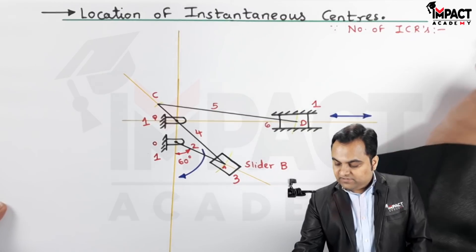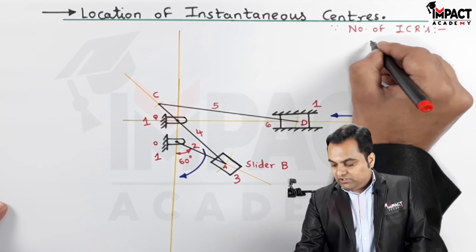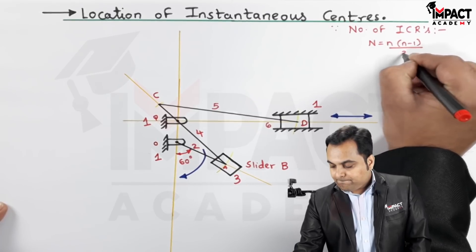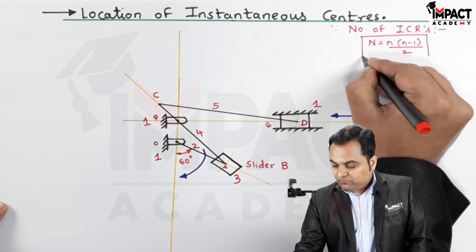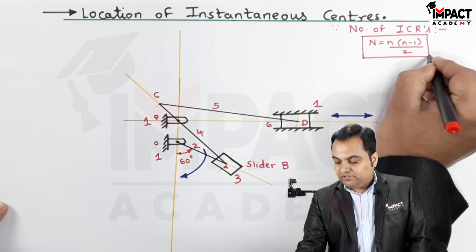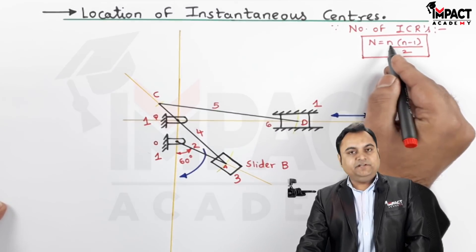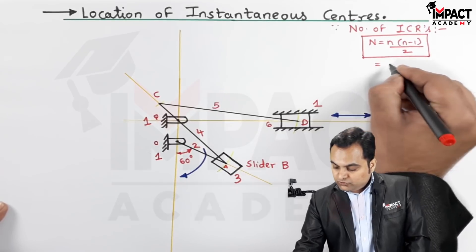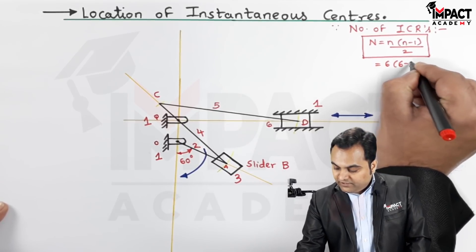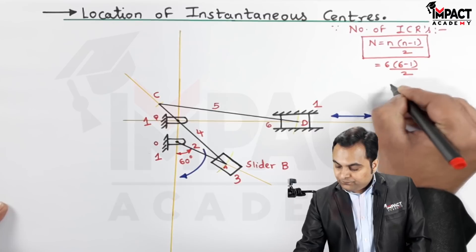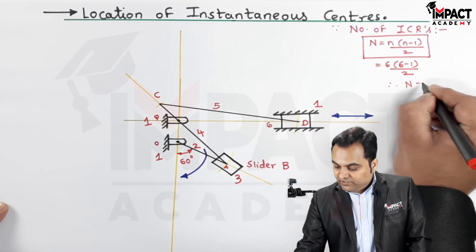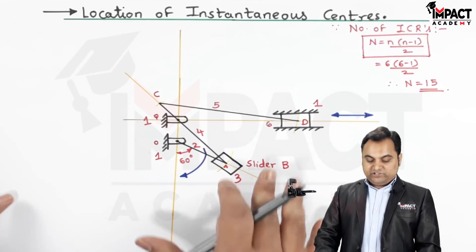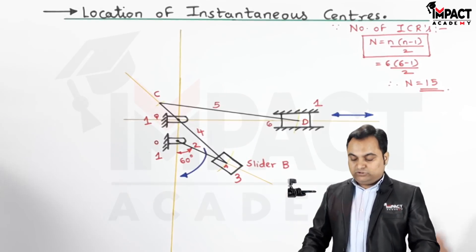The number of ICRs is given by the formula N = n(n-1)/2, where n is the number of links. For a 6-link mechanism: 6 × (6-1) / 2 = 15. So there are 15 ICRs to be located for this mechanism.